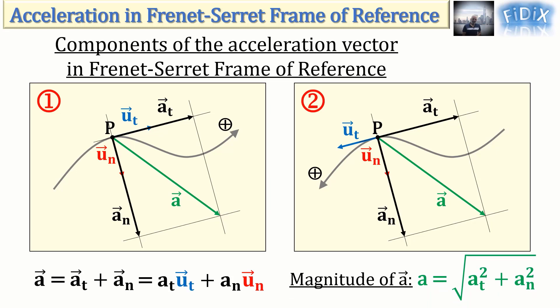The magnitude of the acceleration vector is, as usual, given by the square root of the sum of its squared components.